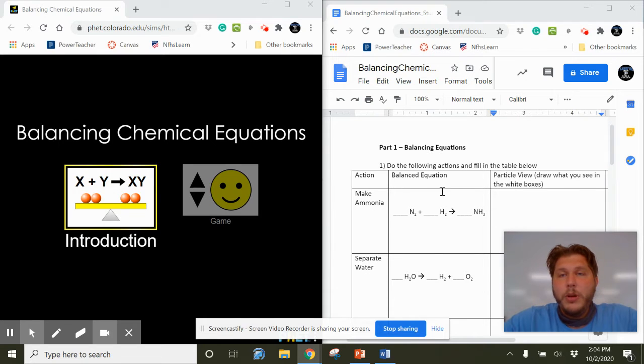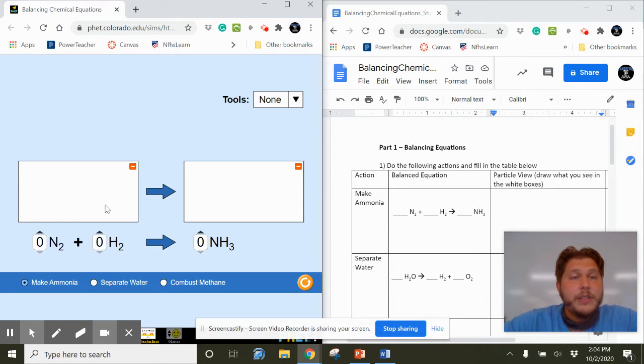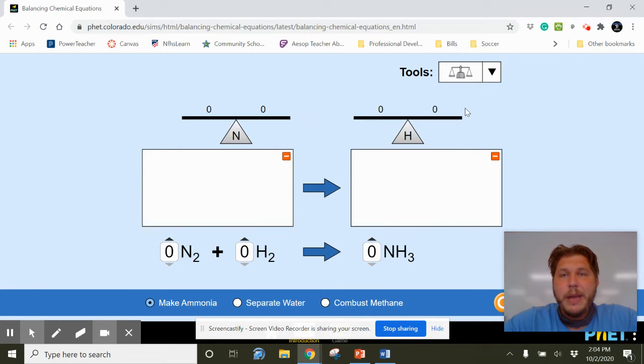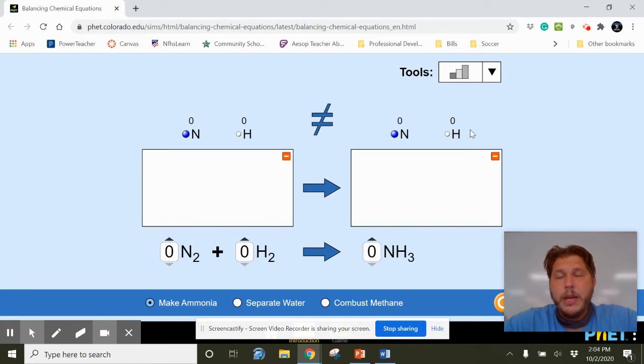Alright, so Part 1: Balancing Equations. We are just wanting to have the Introduction open. The first thing that we're going to do is make sure we have Make Ammonia. I'm going to go ahead and make this bigger so we're just looking at this. Okay, Tools—there's None, there's this balance, and then there's also this bar graph looking thing. So I'm going to go with None for right now.